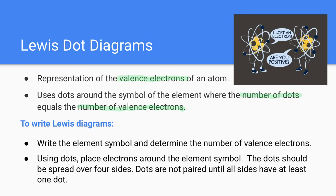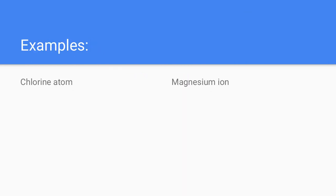To write Lewis diagrams, we take the element symbol, determine the number of valence electrons, and then put dots around it. We want to put one dot on each side of four sides before we start pairing them up. Let's take a look at an example of this and see how this works.